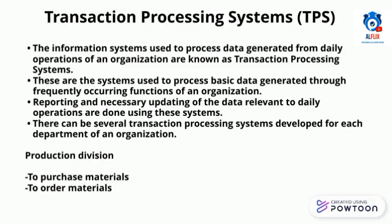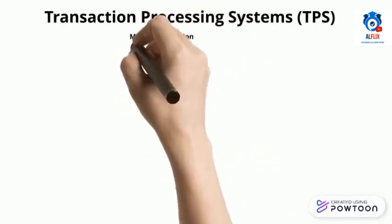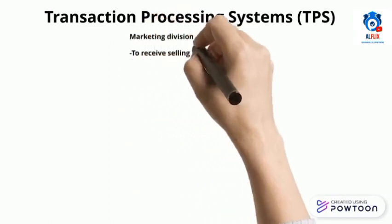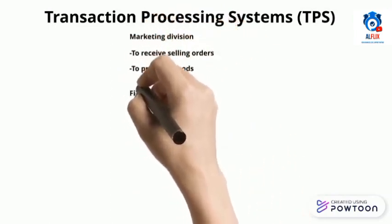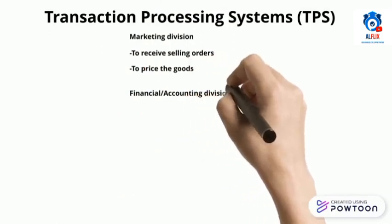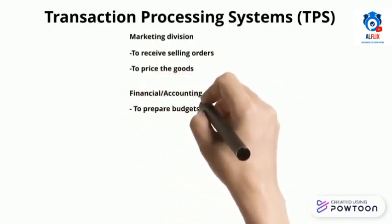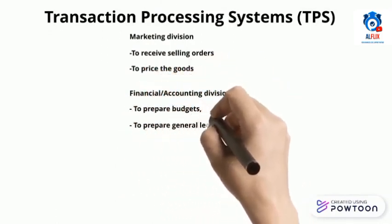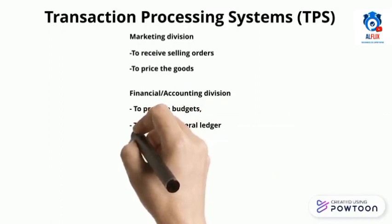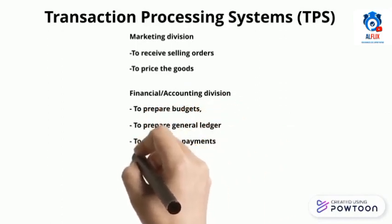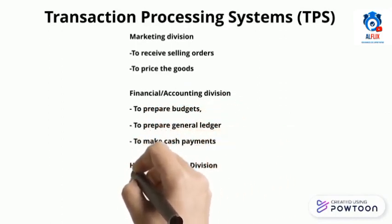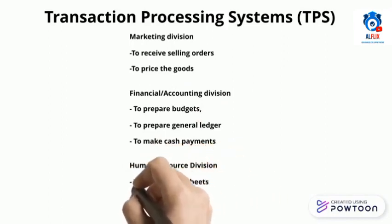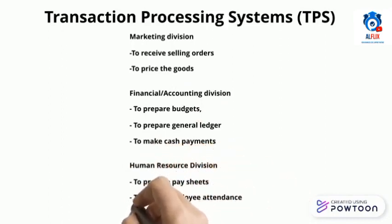Examples of transaction processing systems include: for the production division — purchasing materials and ordering materials; for the marketing division — receiving sales orders and pricing goods; for the financial or accounting division — preparing budgets, preparing the general ledger, and making cash payments; and for the HRD or human resource division — preparing pay sheets, recording employee attendance, and managing training and development.